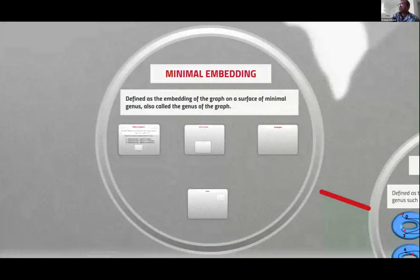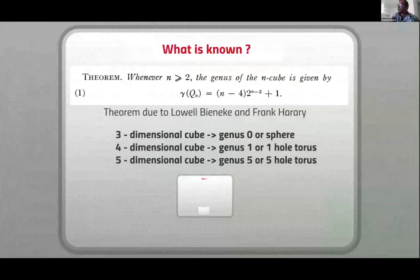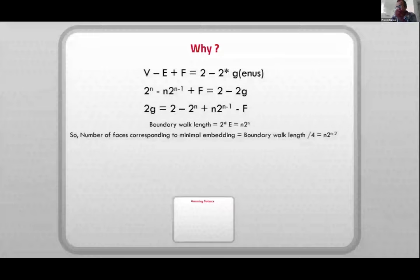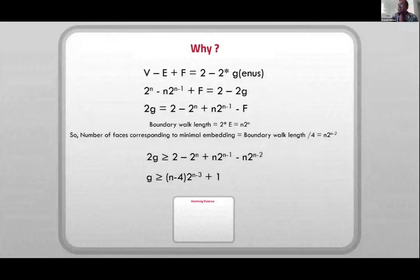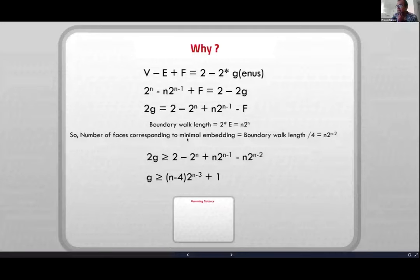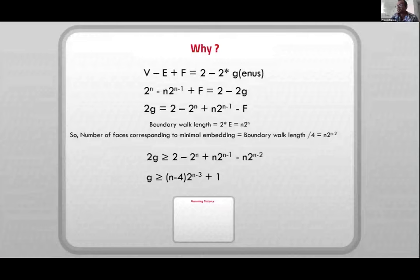The minimal embedding is of a graph on a surface of minimal genus, also called the genus of the graph. What is known is a theorem due to Ringel and Youngs that the genus of an n-cube is given by this expression. What we do is provide an explicit way of finding the embedding itself. The bound can be found by using the relation V minus E plus F equals 2 minus 2g, and substituting values for V, E, and F for QN. One important thing here is for minimal embedding, we want there to be as many faces as possible. The theoretical maximum faces corresponds to having each face being as small as possible, which in the case of a hypercube would be something of size 4.